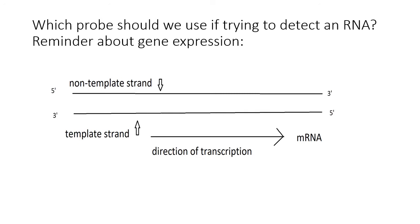Things get more complicated when you're trying to detect an mRNA specifically. Reminder about gene expression: the RNA is a single strand, and it will match one of the strands in the DNA, but not both. So you have to choose which oligo will work to bind the RNA. In a generic gene, we have a non-template strand and a template strand. When transcription occurs, RNA polymerase copies the template strand and moves in a 5' to 3' direction on the RNA being synthesized.